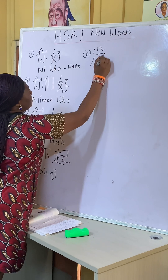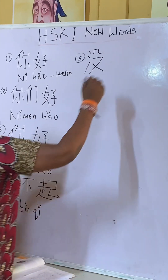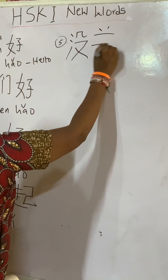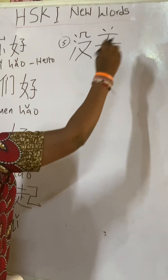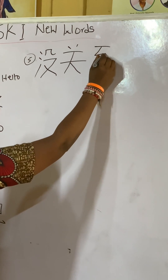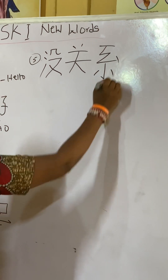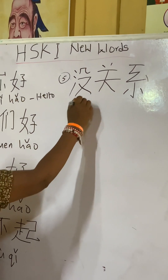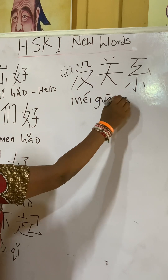Then 关 (guān), 关 (guān), 关 (guān) — then 系 (xi). This is 没关系 (méi guān xi). Actually, 没关系 (méi guān xi) means: that is okay, it doesn't matter, it's okay. When someone says 对不起 (duì bu qǐ), you say 没关系 (méi guān xi), meaning you are welcome or it doesn't matter.